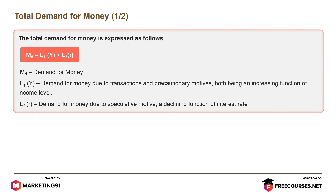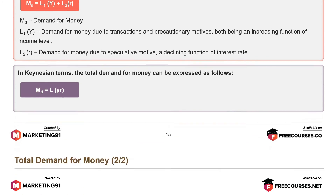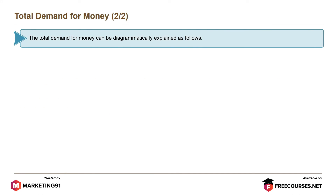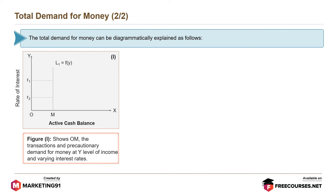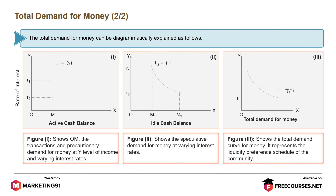The total demand for money is expressed as Md equals L1 of Y plus L2 of R, where Md is the demand for money, L1(Y) is demand for money due to transactions and precautionary motives — both being an increasing function of income level — and L2(R) is demand for money due to speculative motive, a declining function of interest rate. In Keynesian terms, total demand for money is Md equals L(Y, r). Figure 1 shows OM transactions and precautionary demand at Y level of income. Figure 2 shows speculative demand at varying interest rates. Figure 3 shows the total demand curve, representing the liquidity preference schedule of the community.